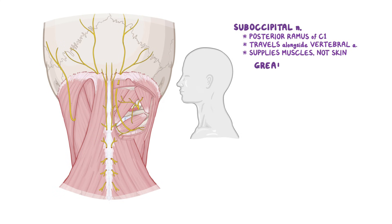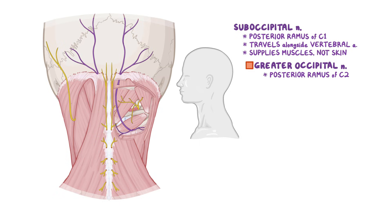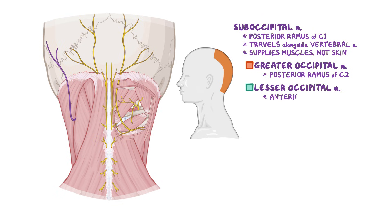Next, there's the greater occipital nerve, which is a branch of the posterior ramus of spinal nerve C2. It emerges inferior to the obliquus capitis inferior muscle and then ascends to supply the skin of the posterior scalp. Then there's the lesser occipital nerve, which arises from the anterior rami of the spinal nerves C2 and C3. This nerve supplies the skin of the superior posterolateral neck and the scalp posterior to the external ear.